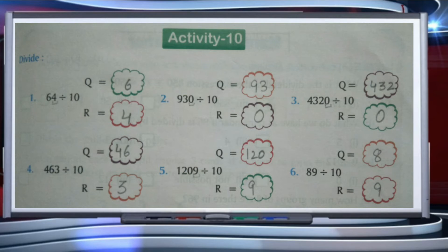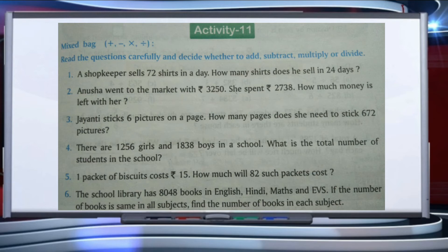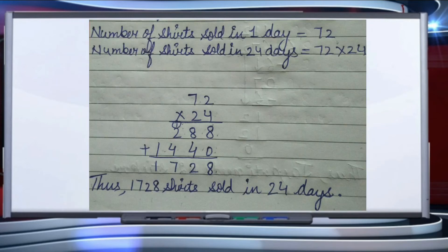Now we will start Activity 11 — word problems. The first question: a shopkeeper sells 72 shirts in a day. How many shirts does he sell in 24 days? Number of shirts sold in one day is 72. Number of shirts sold in 24 days equals 72 multiplied by 24.